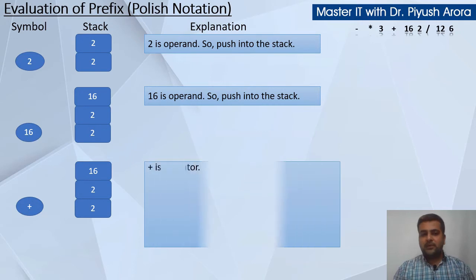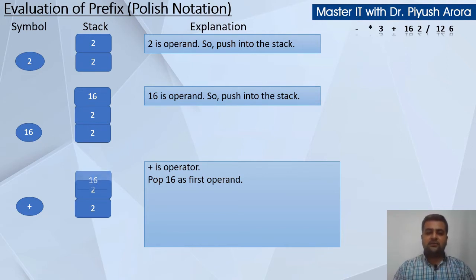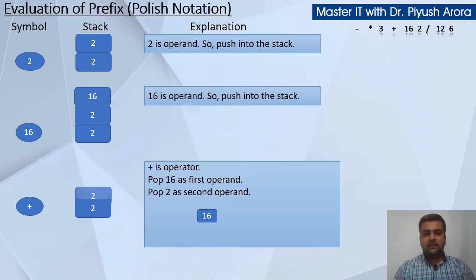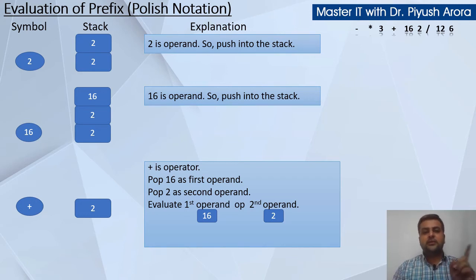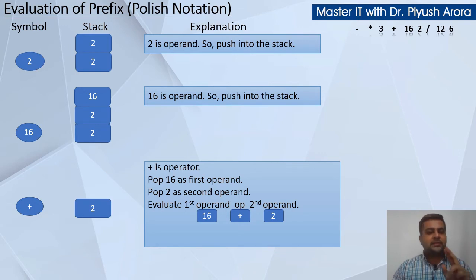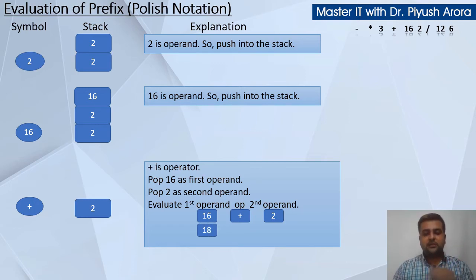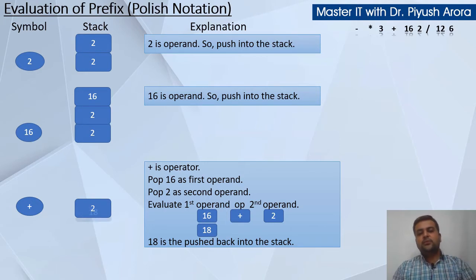Plus is an operator — stack ke andar se 2 values pehle pop ki jaati hain. Pehle hum 16 ko pop karenge as the first operand. And now pop 2 as the second operand. Evaluate: first operand op second operand — op is plus, so 16 plus 2 equals 18. Dhyan dijiye — 16 plus 2 and 2 plus 16 are both same, so plus mein fark nahi padta. 18 is pushed back into the stack. Next value scan karte hain — 3 dikhata hai, and 3 is operand, push it into the stack.